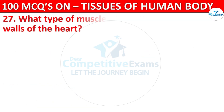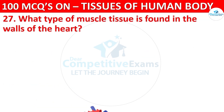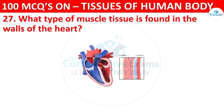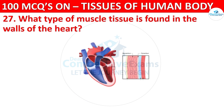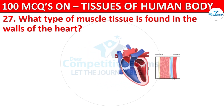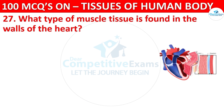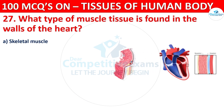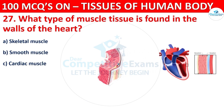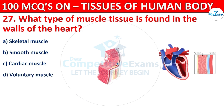What type of muscle tissue is found in the walls of the heart? Options are Skeletal Muscle, Smooth Muscle, Cardiac Muscle, or Voluntary Muscle.